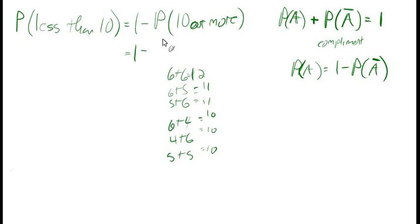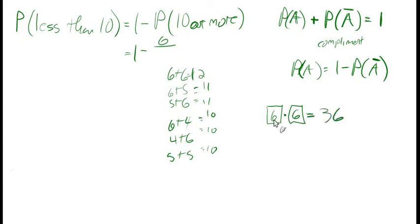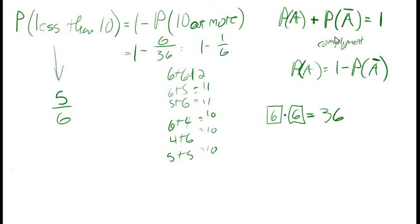So 5/6 is the probability of getting less than 10. That's the idea of a complement: when counting the probability you want would take a lot of work, counting the complement is faster, and we just subtract that from 1. We'll put all of this to use in the sample problems video. Thanks for watching.